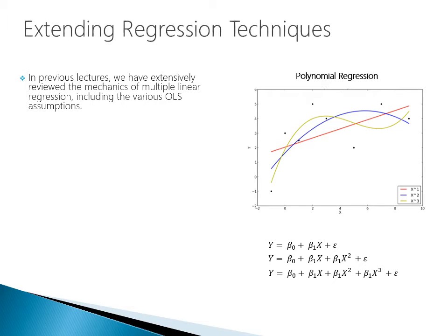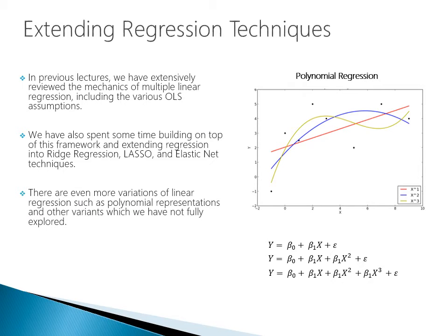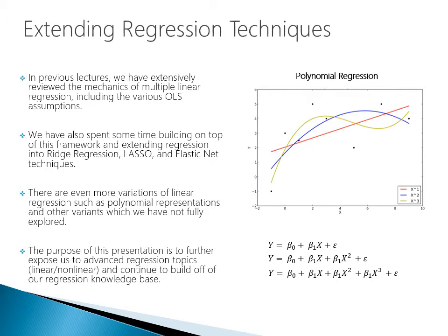In previous lectures, we have extensively reviewed the mechanics of multiple linear regression, including the various OLS assumptions. We have also spent some time building on top of this framework and extending regression into ridge regression, lasso, and elastic net techniques. There are even more variations of linear regression, such as polynomial representations and other variants, which we have not fully explored. The purpose of this presentation is to further expose us to advanced regression topics, both linear and nonlinear, and continue to build off of our regression knowledge base.